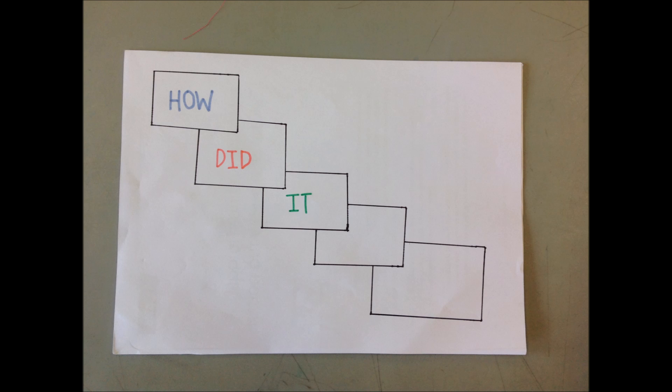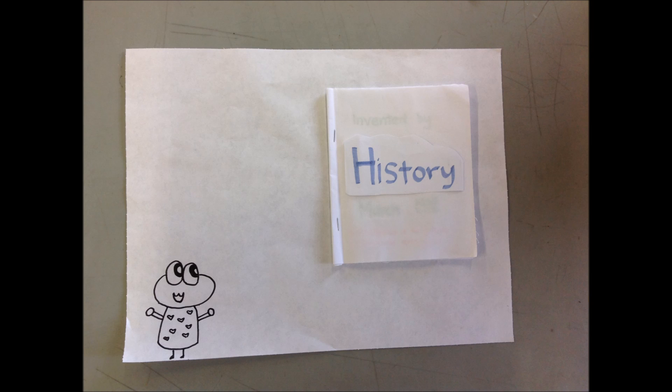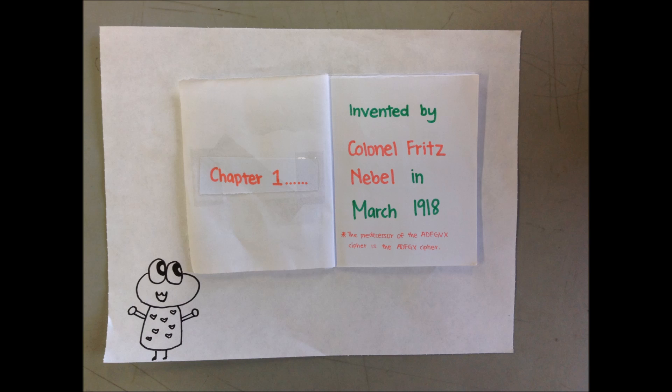How did the ADFGVX Cypher even come about? Well, let's turn back time and go all the way back to 1918. The ADFGVX Cypher was invented by Colonel Fritz-Niebel in March 1918. It is an improvement to its predecessor, the ADFGX Cypher, which worked in the same manner.